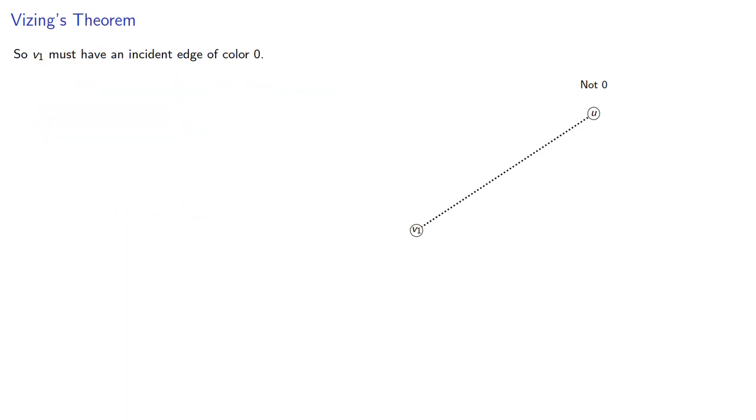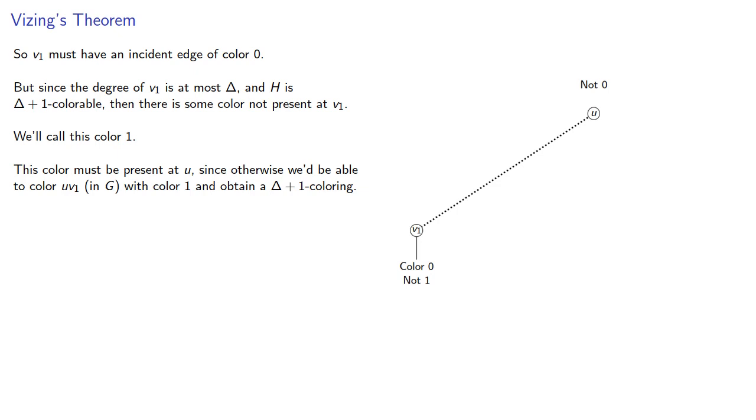So this means that v1 must have an incident edge of color 0. But since the degree of v1 is at most delta and h is delta plus one colorable, then there's some other color not present at v1. We'll call this color 1. This color must be present at u, since otherwise we'd be able to color uv1 in g with color 1 and obtain a delta plus one coloring.